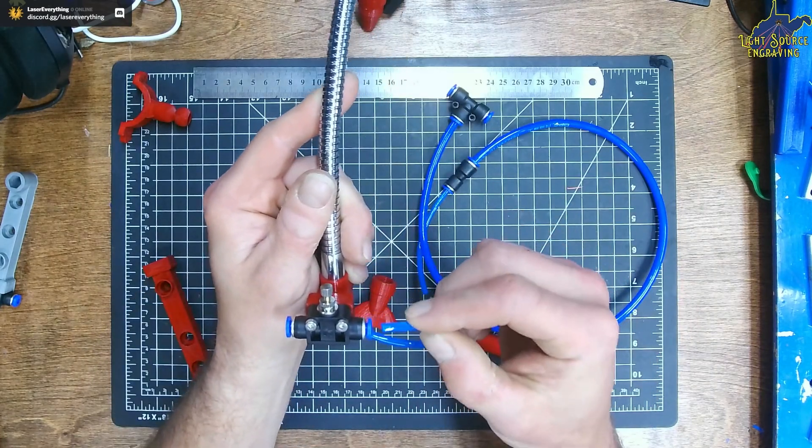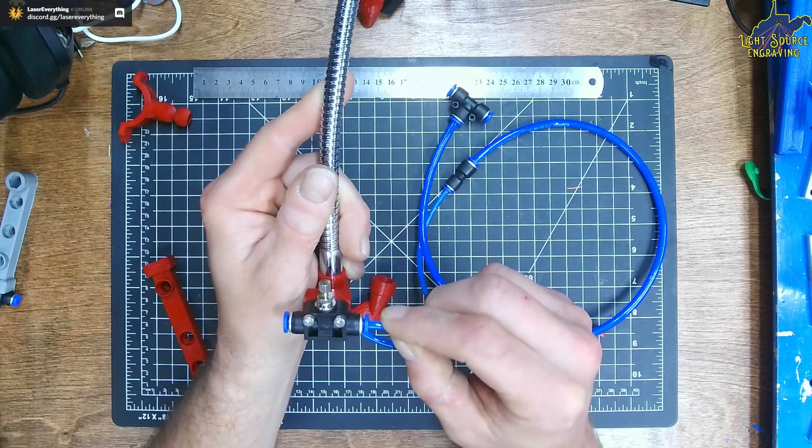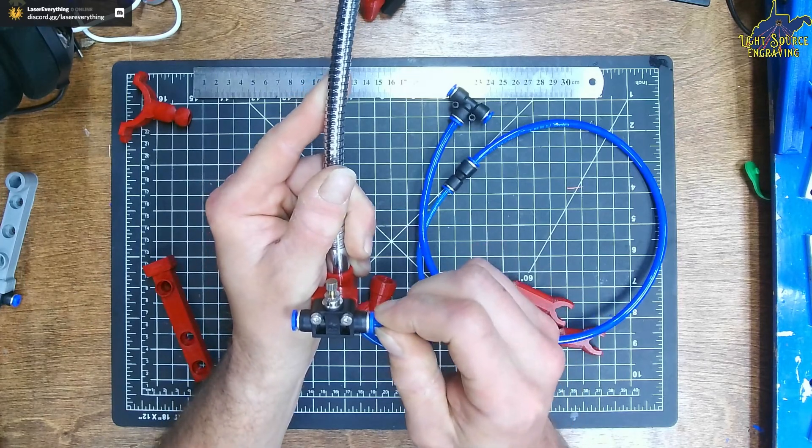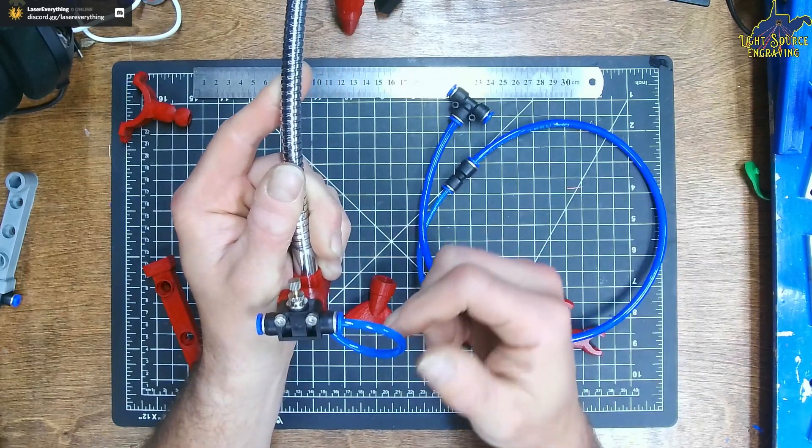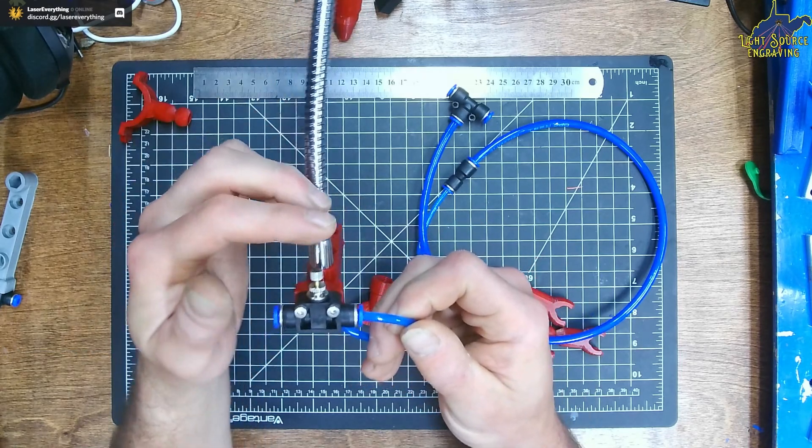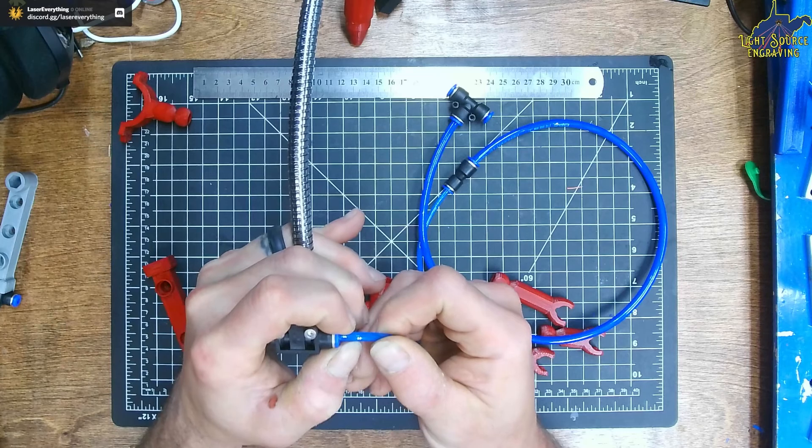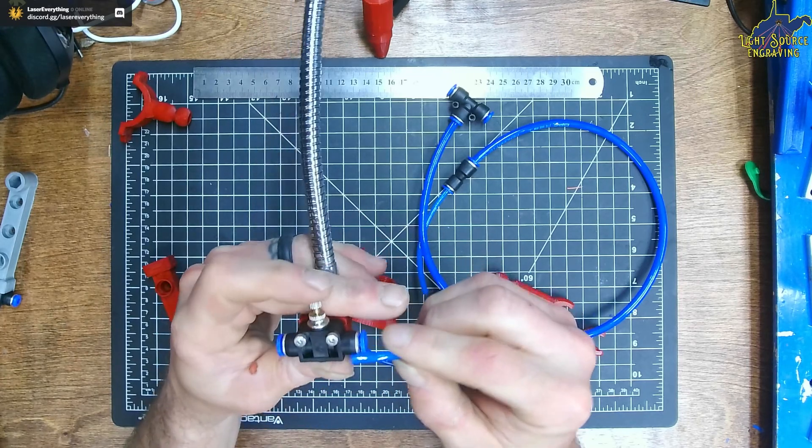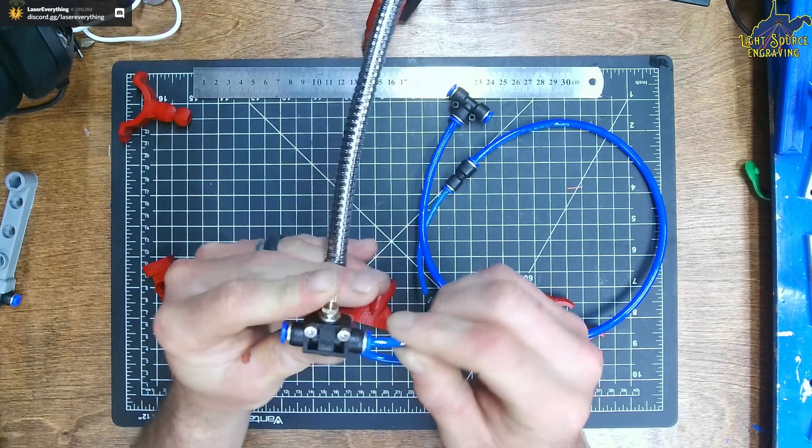Attach the small tube coming from the gooseneck to the right side of the valve. These are just push-to-connect fittings. If you need to remove the tube in order to change bases, simply push the blue retaining piece in and pull the tube out.